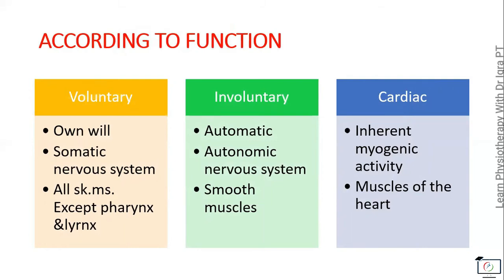Voluntary means the muscles that work on their own will — you can control those muscles, and they are under the control of your somatic nervous system. The involuntary muscles are not under your control; they have the autonomic nervous system guiding them to work automatically. The cardiac muscles have inherent myogenic activity.